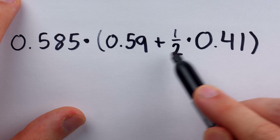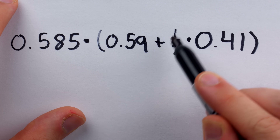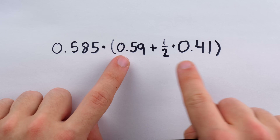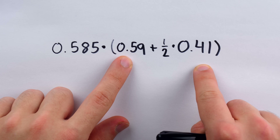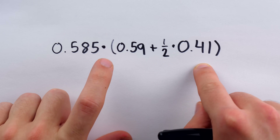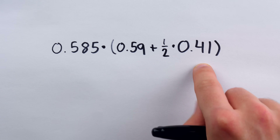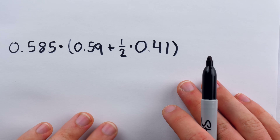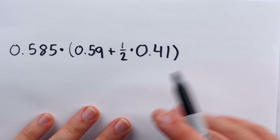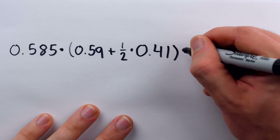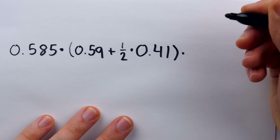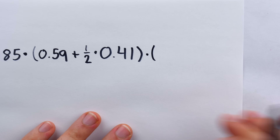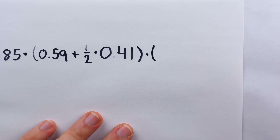Even if we don't know the answer, there's still half of that time where we'd get it right just by luck. We multiply these probabilities together because we're still assuming independence, and now we just have to multiply by the probability that we get the third question correct.